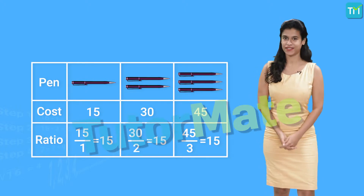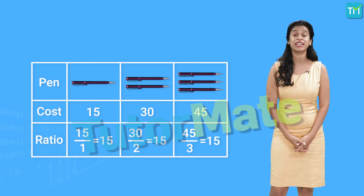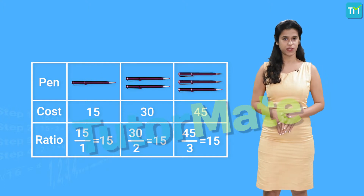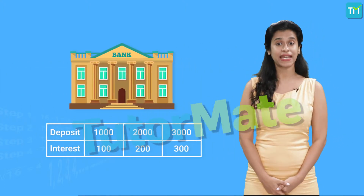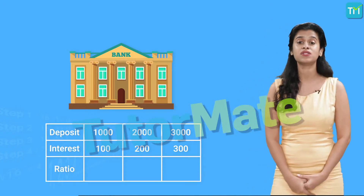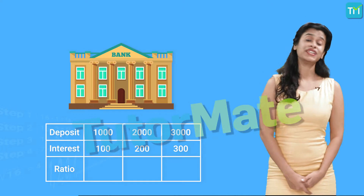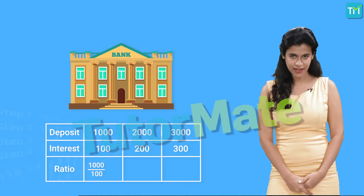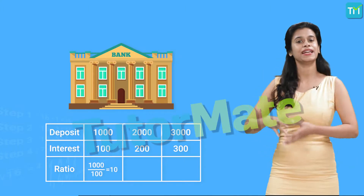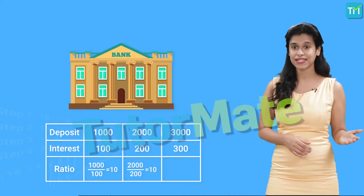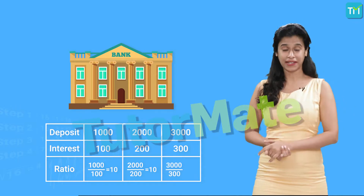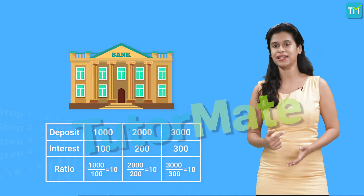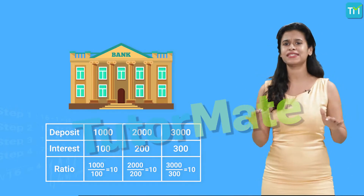So what did we observe here? Clearly we can see that the ratio of the total cost of pens to the number of pens remained constant in all 3 situations. Similarly, if we look back at the second example and calculate the ratio of the amount deposited to the interest paid by the bank in all 3 situations, we get 1000 upon 100, that is 10 for the first situation. Then 2000 upon 200 is again equal to 10 in the second situation, while 3000 upon 300 is yet again equal to 10 in the third situation. The ratio remained constant for all the situations.